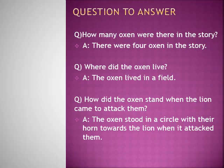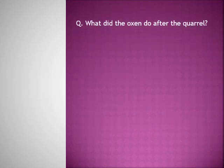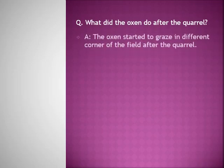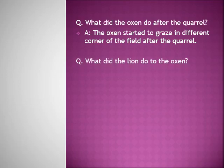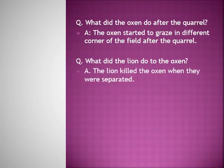Fourth question: What did the oxen do after the quarrel? The oxen started to graze in different corners of the field after the quarrel. Fifth question: What did the lion do to the oxen? The lion killed the oxen when they were separated.